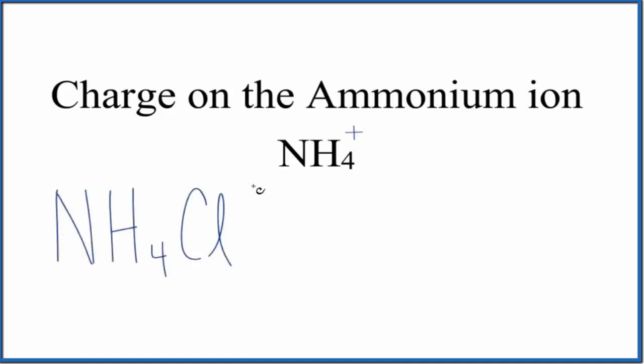We know that the chloride ion forms ions that are 1-. So the ammonium ion here, that has to be 1+, for the charges to balance out, to give us a net charge of 0. So we have that 1+, on the ammonium ion.